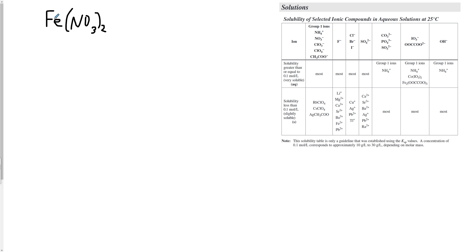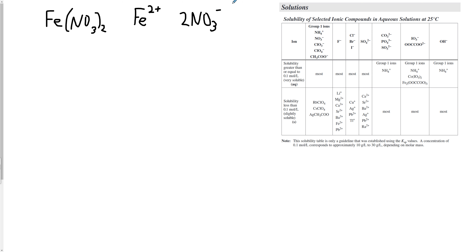Let's look at iron(II) nitrate, Fe(NO₃)₂. Why is it iron two? Because the charge of the iron in this ionic compound is +2. Each iron with a +2 charge is hooked up to two nitrate ions.